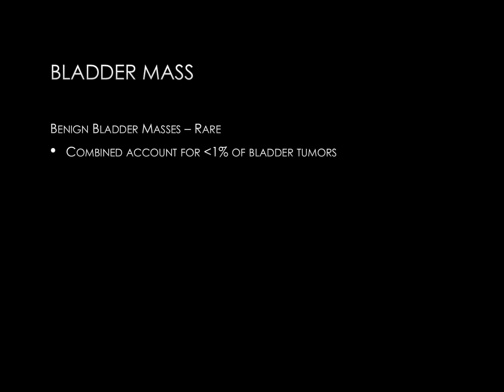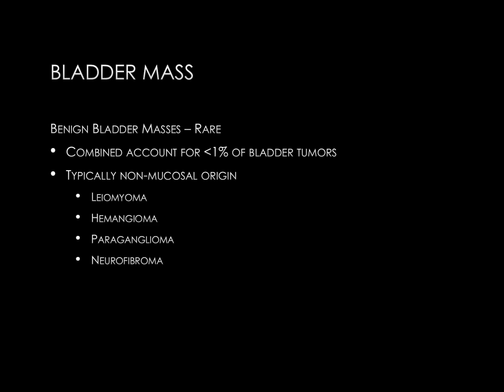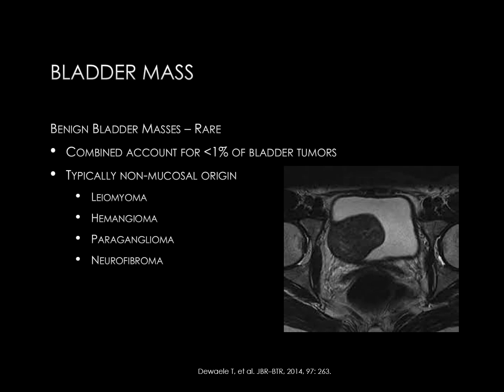Benign bladder masses are rare, and when combined, account for less than 1% of all bladder tumors. These are typically non-mucosal in origin, arising from the muscular layer of the bladder or traversing nerves or blood vessels. Subtypes include leiomyoma arising from the smooth muscle, hemangioma from blood vessels, and paraganglioma or neurofibroma arising from traversing nerves. The MR image on the right aspect of the screen includes a smoothly marginated mass at the right aspect of the bladder, with the mucosal layer appearing intact — this mass is actually arising from within the wall of the bladder, and proved to be a leiomyoma.